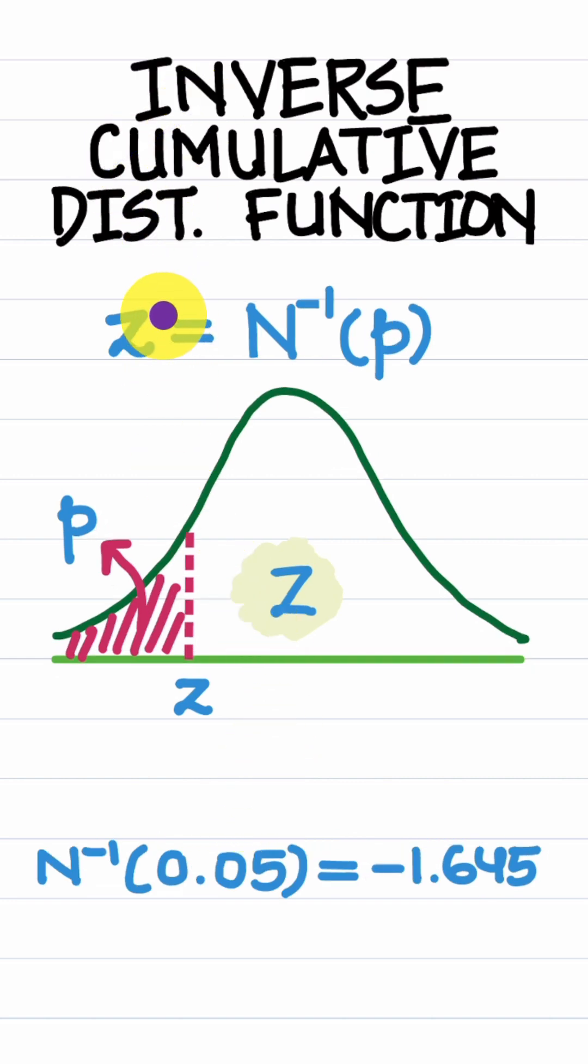Second, the inverse CDF, which returns the Z corresponding to an input probability. For example, for P equal to 0.05, the corresponding Z which accumulates this much area to its left and under the curve turns out to be this much.